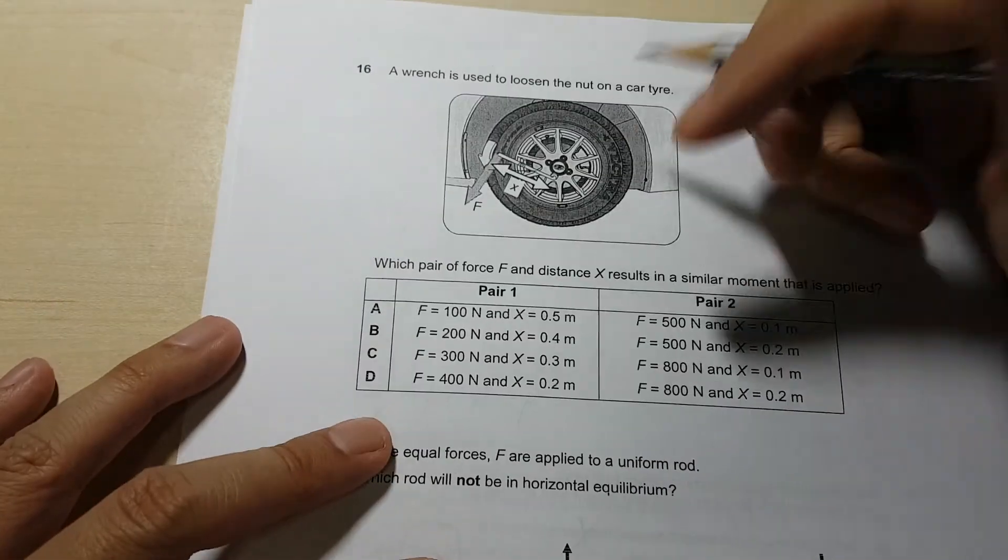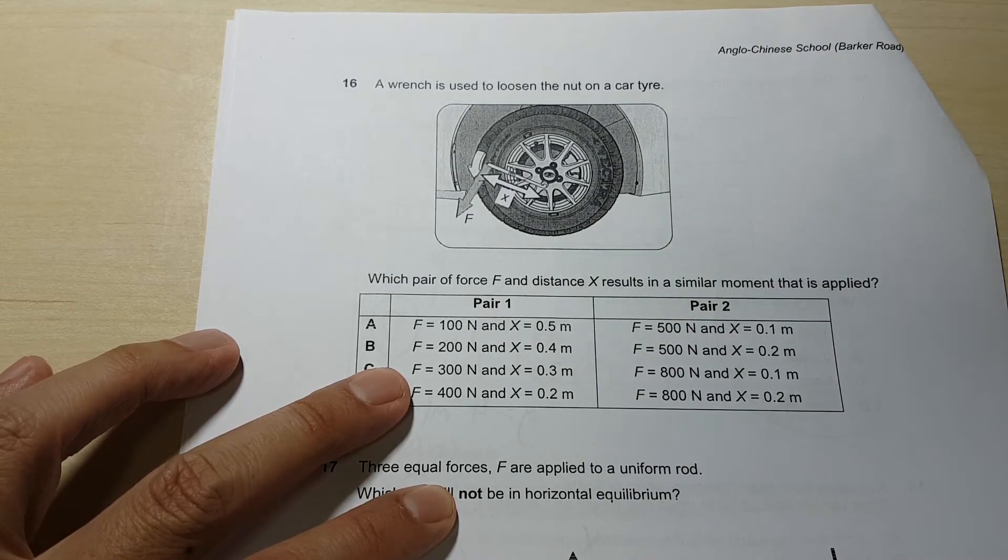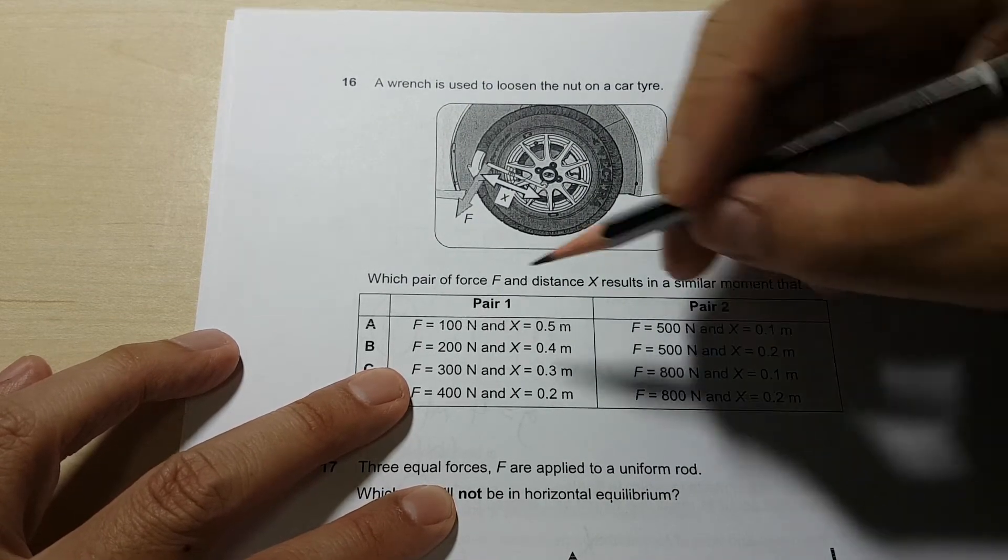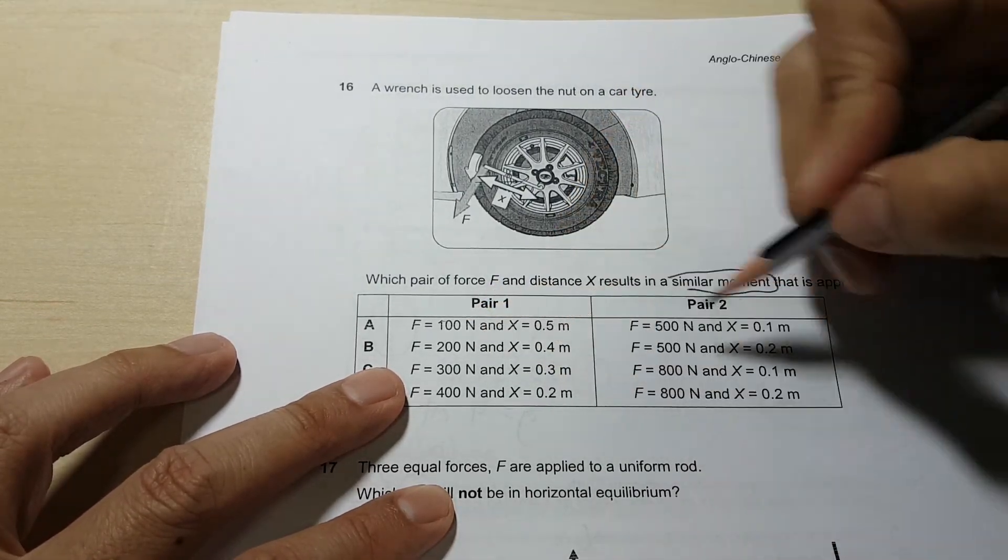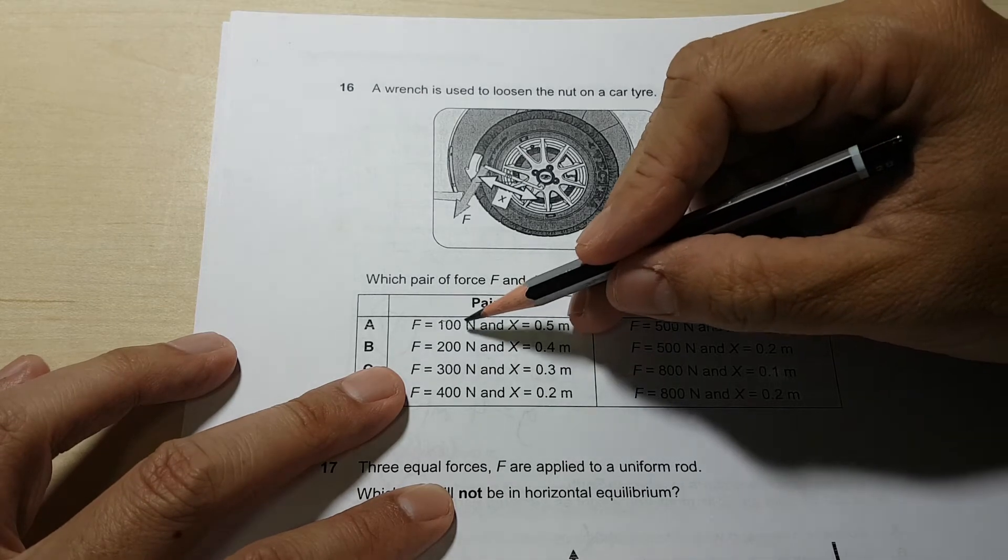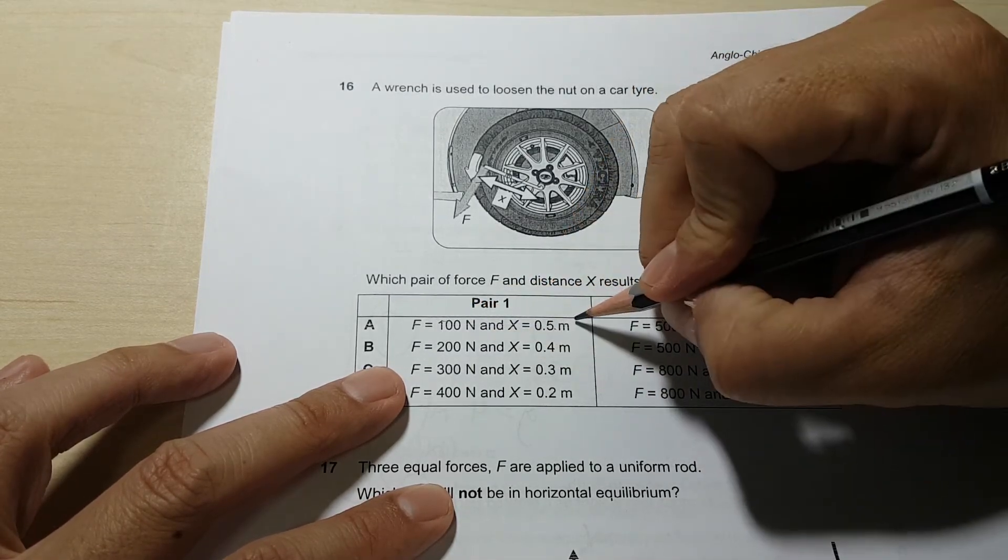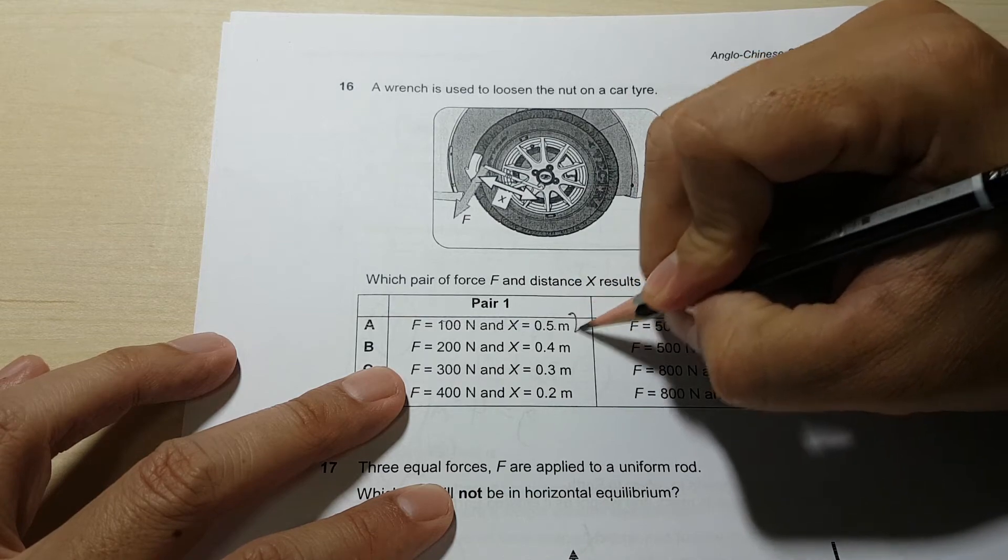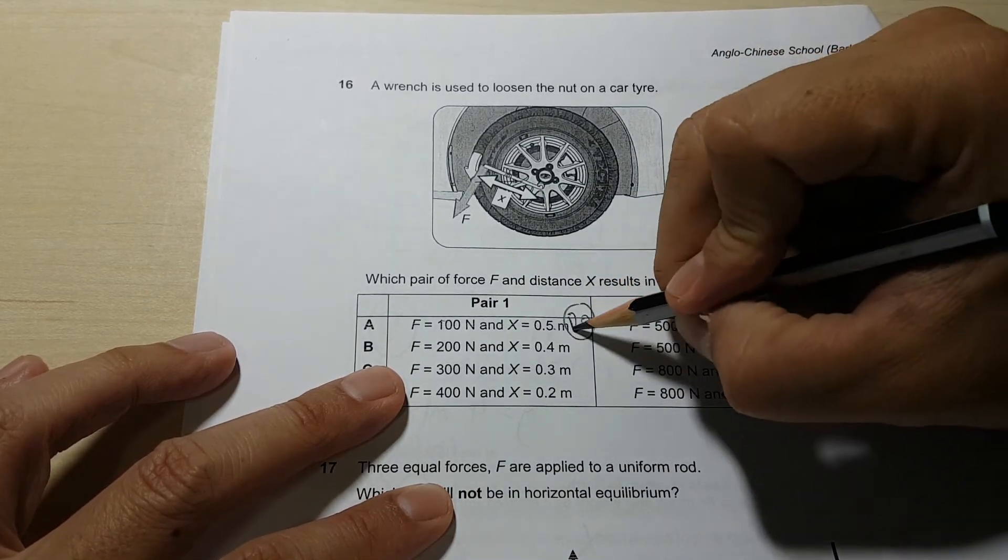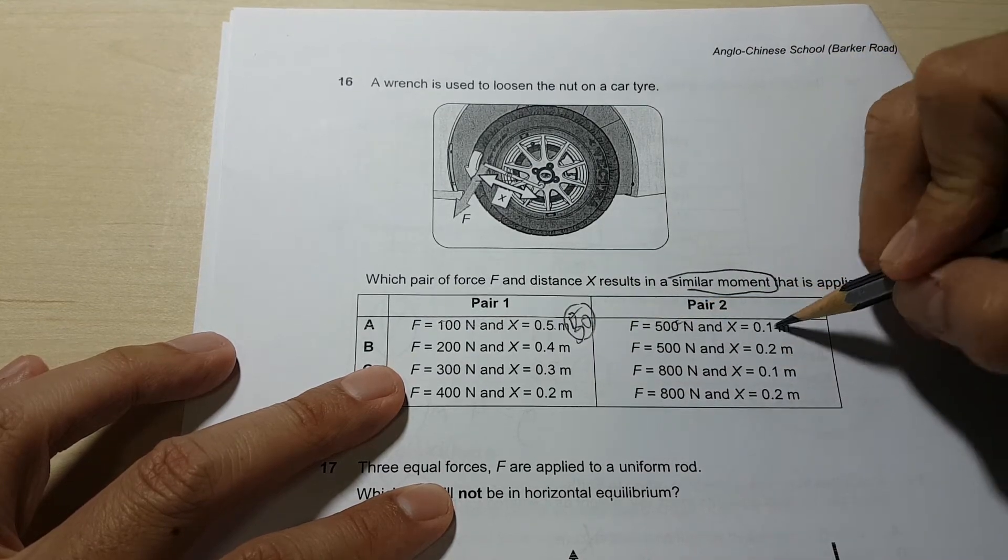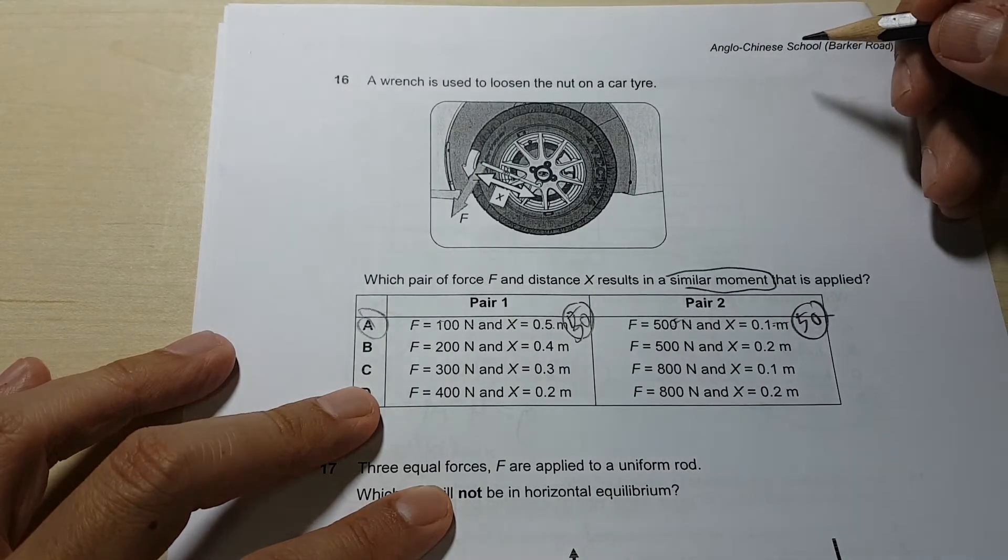What about this? This is the only one that you find out. Which pair of force F and distance X result in similar moments? That means this times this must be equal to this times this. So the answer in this case will be A, because 100 times 0.5 is 50, and 500 times 0.1 is also 50. So answer A.